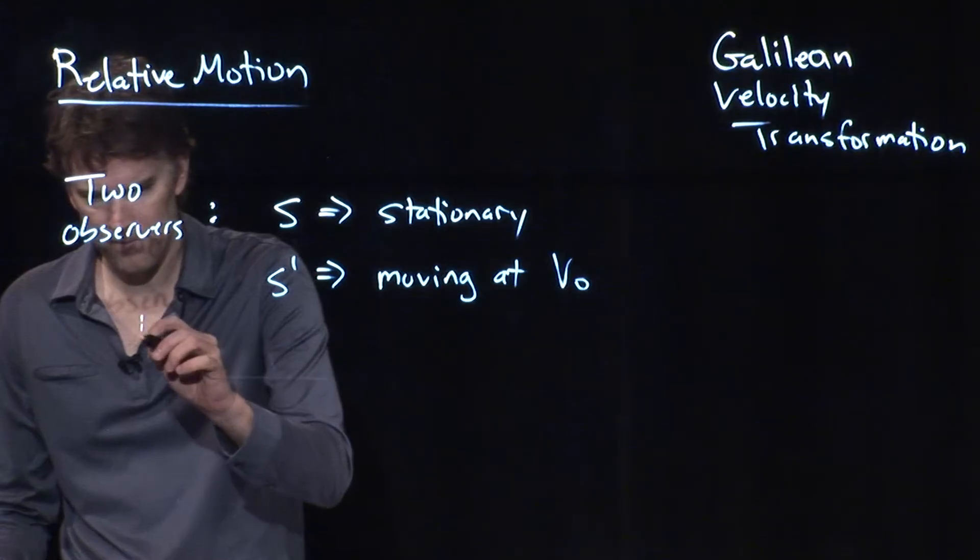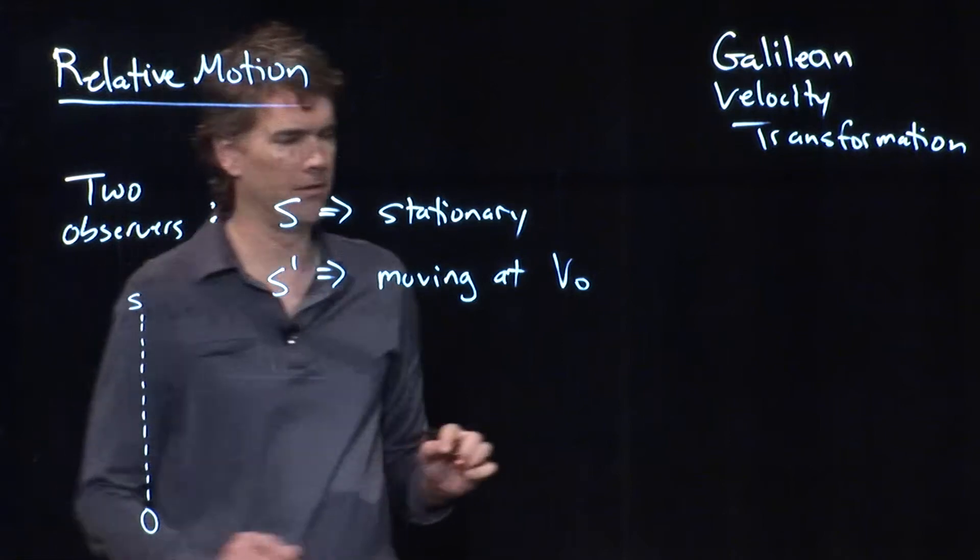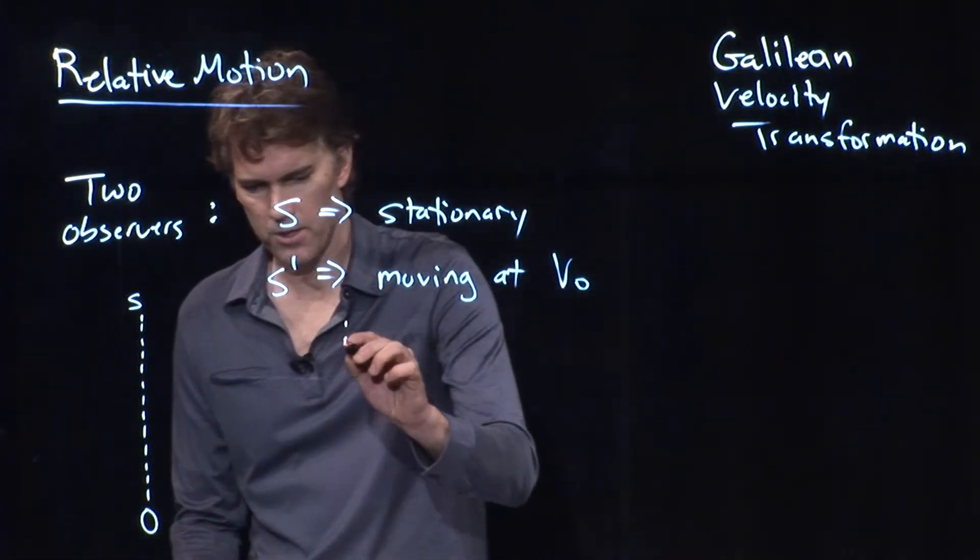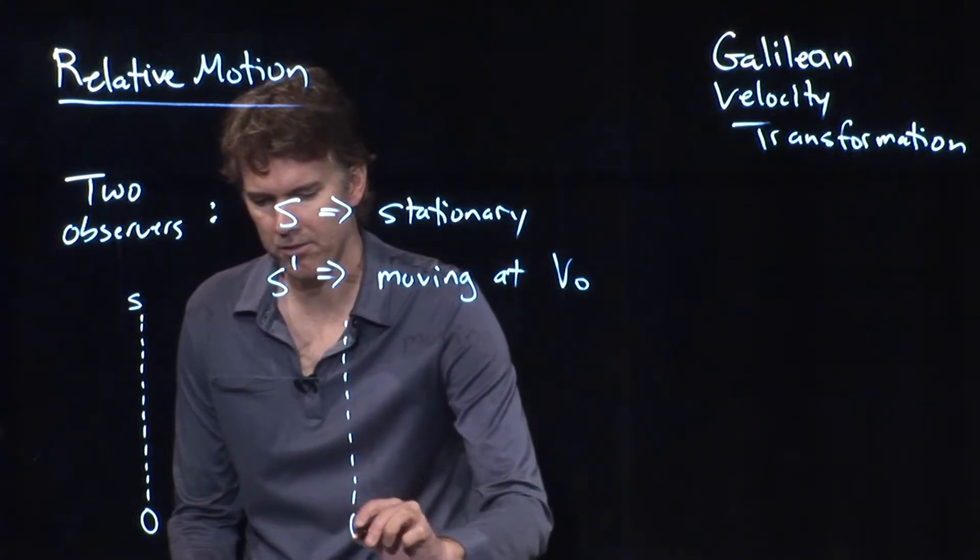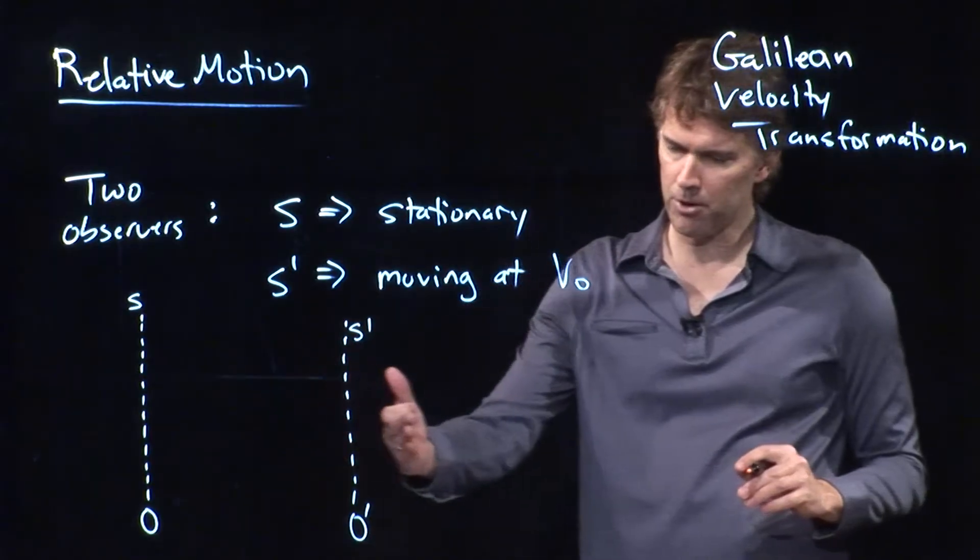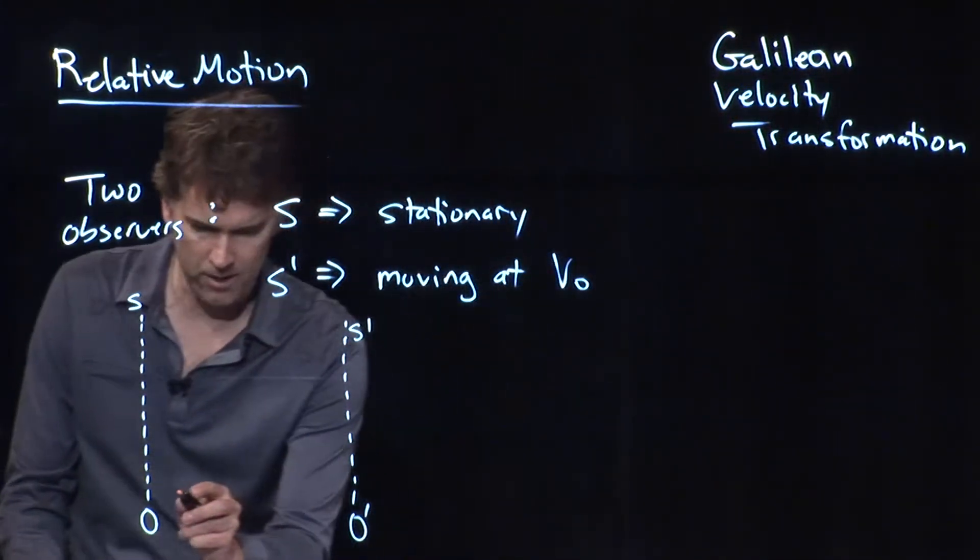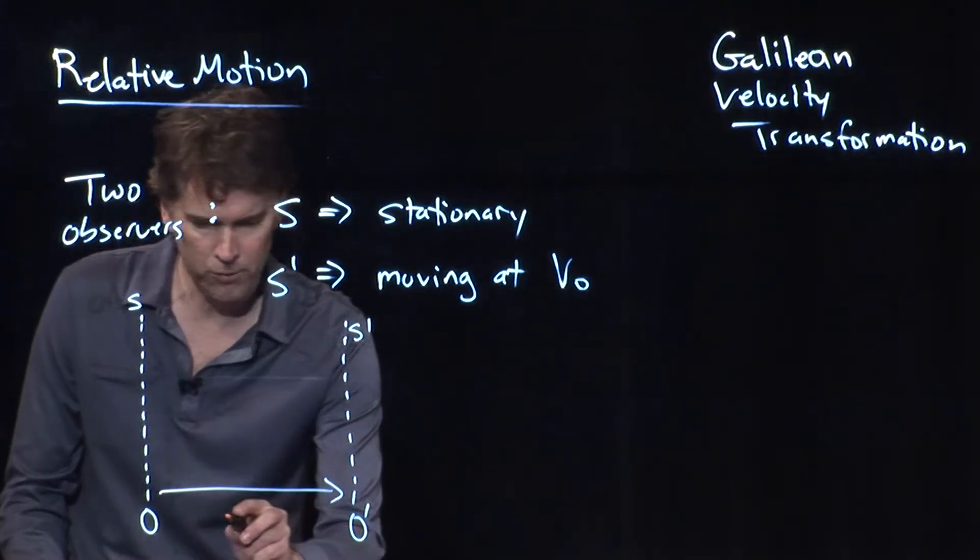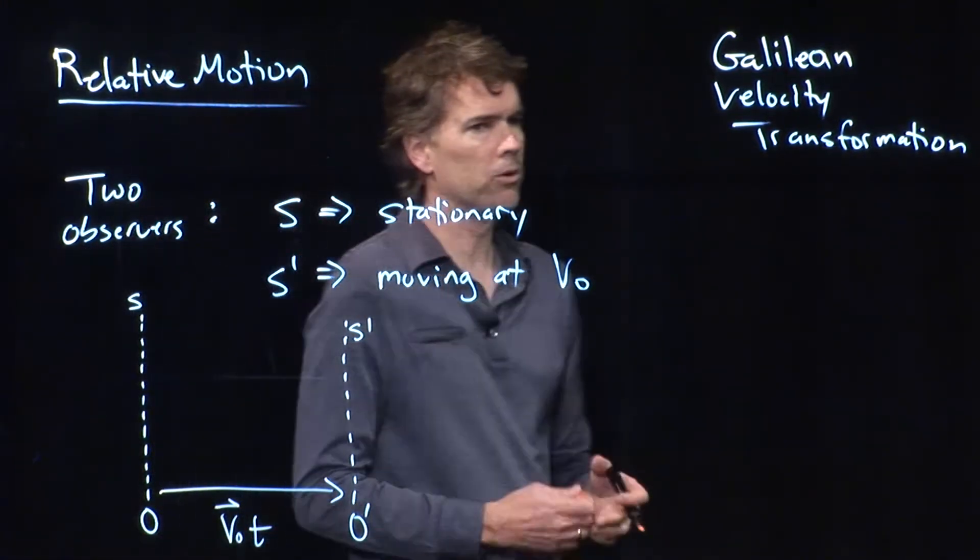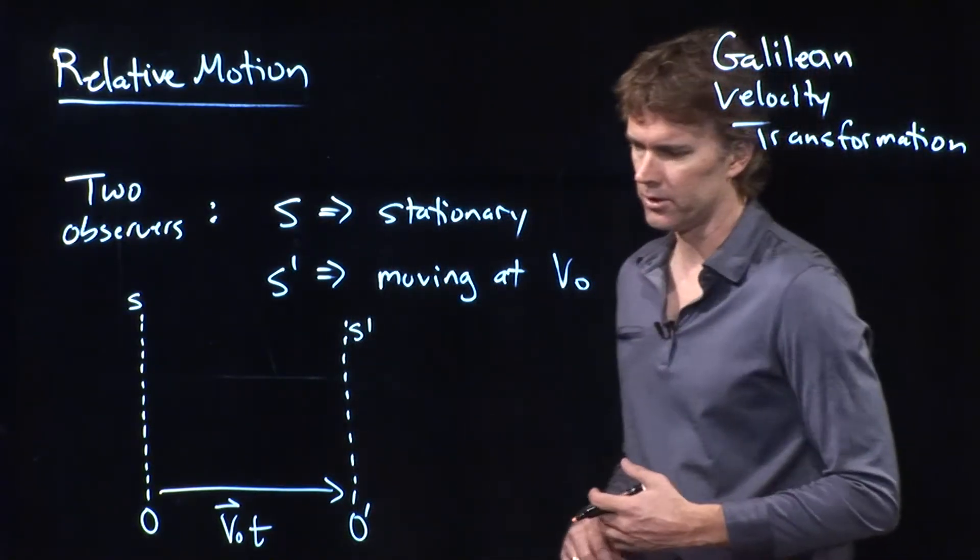Well, the way we do it is the following. Let's draw an origin for the S frame. And let's draw a different origin for the S prime frame. And we know that the S prime frame is moving along relative to the S frame. And it's, in fact, moving at speed V-naught. So, in a time T, it will traverse a distance V-naught T. Just increases as a function of time.